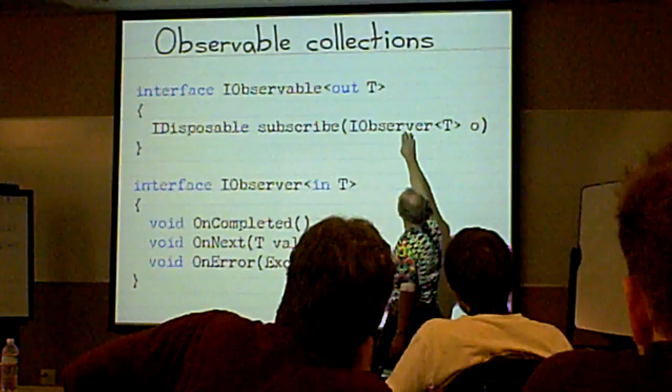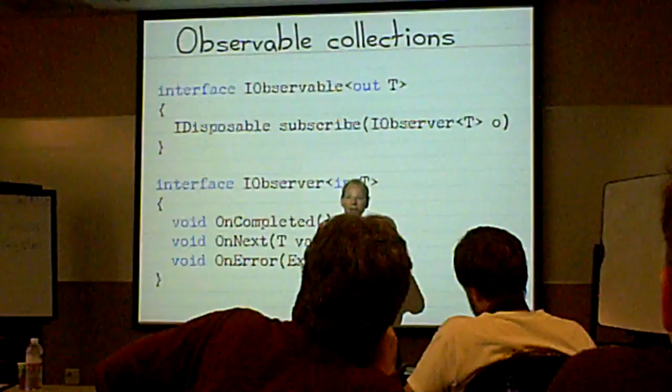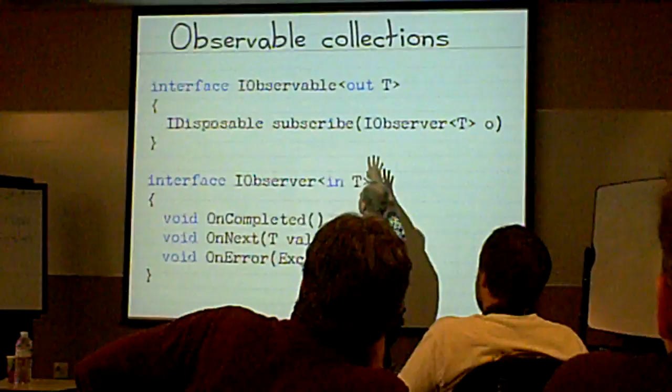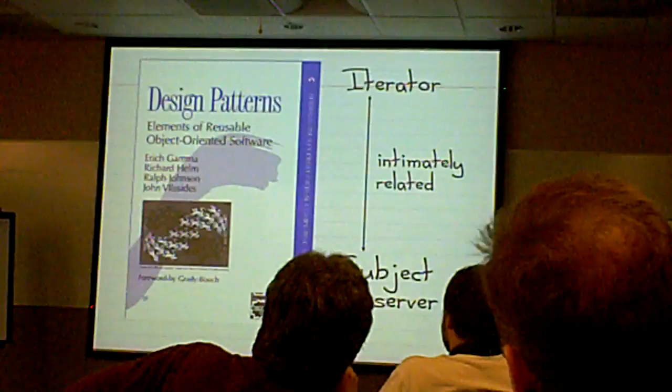In some sense, this thing here is the same. So when you subscribe to an observable collection, you get back a disposable. And when you call disposable, it's like cancelling the subscription. Okay? So it's the same kind of operational behavior. So we've kind of dualized the push and pull, but we've left invariant the way that you can cancel interacting with that collection. So that's kind of nice.